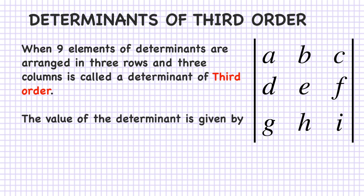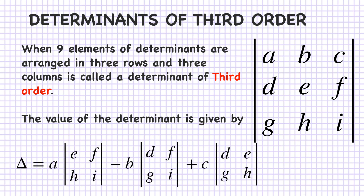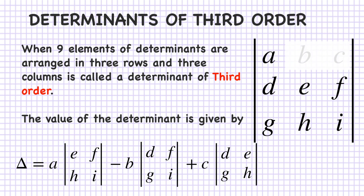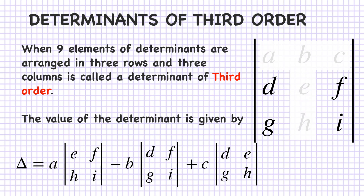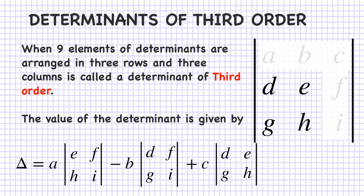The value of a third-order determinant is given by delta equals A(EI minus FH) minus B(DI minus FG) plus C(DH minus EG). When taking element A, we hide the row and column of A and take the remaining as a second-order determinant. Similarly for B and C — hide their respective row and column, and the remaining numbers form the second-order determinant.